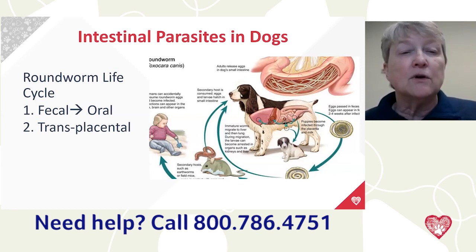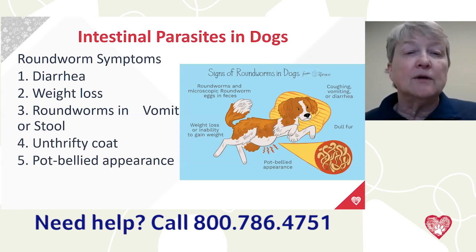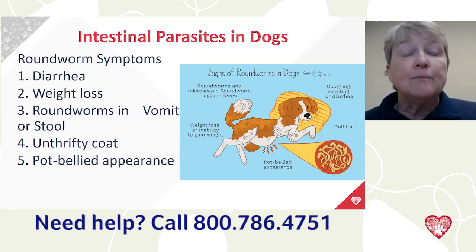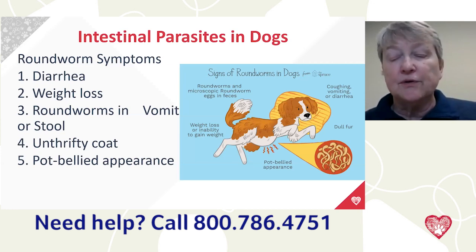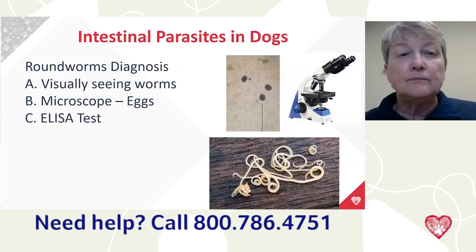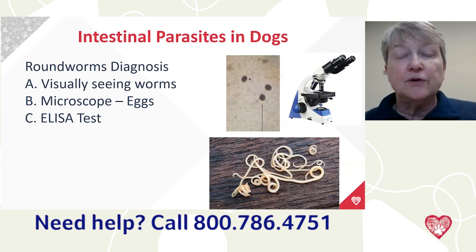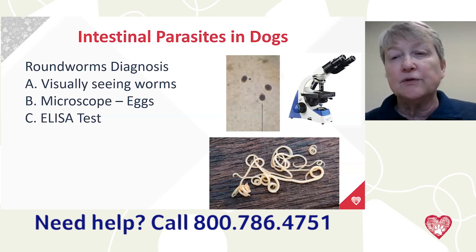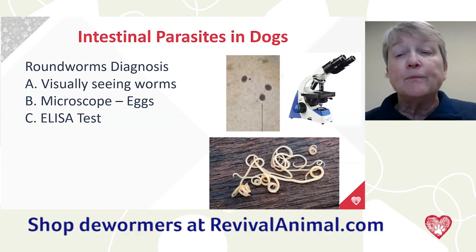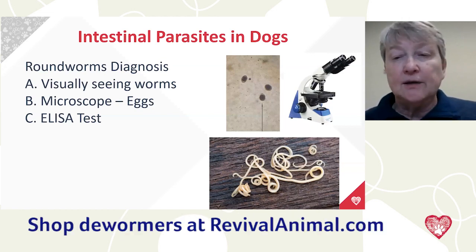So puppies can literally be born with worms if the mother had roundworms and you didn't follow the protocol we'll discuss shortly. Symptoms of roundworms include diarrhea, weight loss, roundworms visible in vomit or stool, unthrifty coat, and pot-bellied appearance. Diagnosis is made by seeing worms in the stool or vomit, by fecal flotation under a microscope, or by an ELISA test run at diagnostic labs. Treatment uses Nemex or Strongid — both are pyrantel pamoate — or fenbendazole labeled for puppies over six weeks of age.